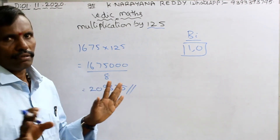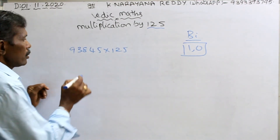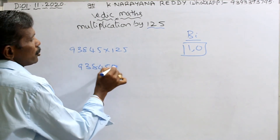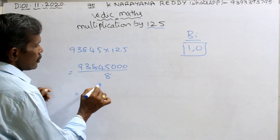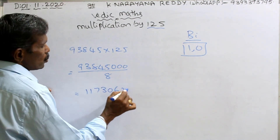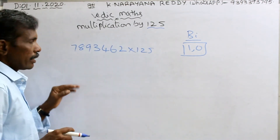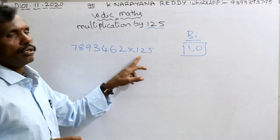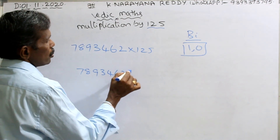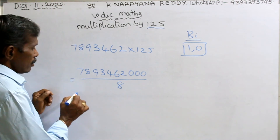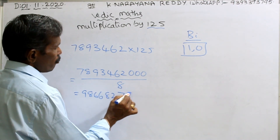93845 into 125. Same logic — 93,845,000 by 8. Division by 8 gives 11,730,625. In this way you can do multiplication within a short period — 1 second or 2 seconds. Take this number: 7,893,462 into 125. Same procedure — 7,893,462,000 divided by 8 gives 986,682,750.